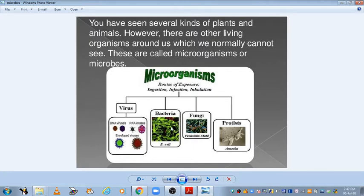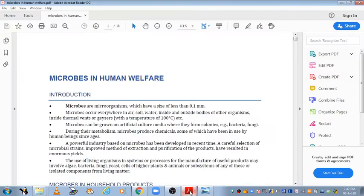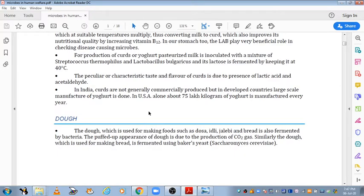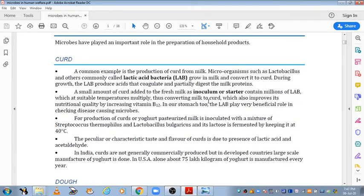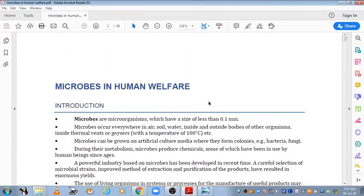So, let's start. Microbes in Human Welfare. We know that microbes are the microorganisms which have a size of less than 0.1 mm. Microbes occur everywhere in air, soil, water, inside and outside bodies of other organisms.